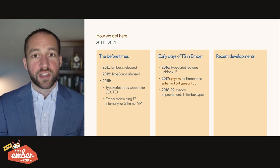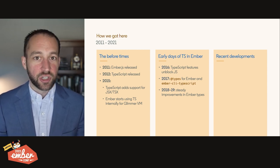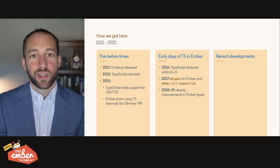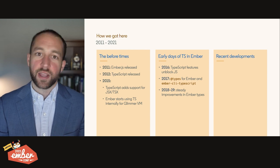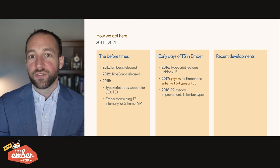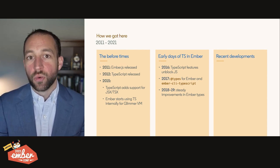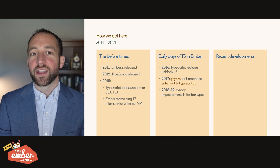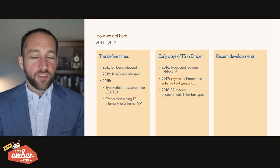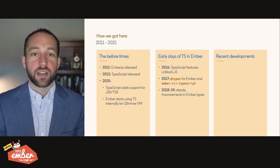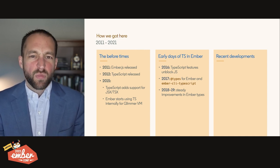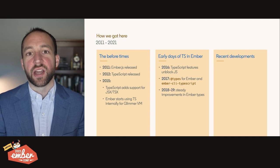In 2016, near the end of the year, TypeScript put out a couple key features — keyof and map types — which unblocked the ability to actually represent Ember's classic approach to building things in TypeScript. It was a little janky, but we could do it. And so in 2017, a group of us got together and we made Ember CLI TypeScript work, and we built out type definitions on Definitely Typed, the @types packages you're all familiar with.